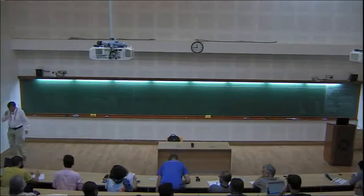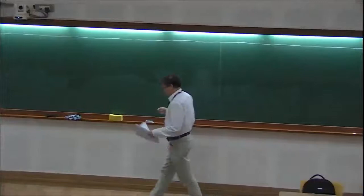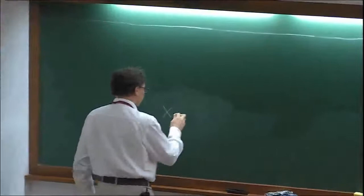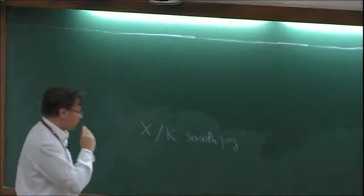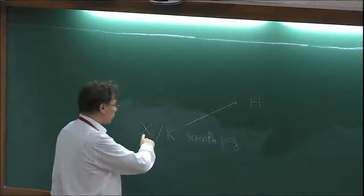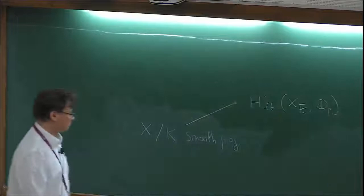The main goal of this second lecture is to construct Fontaine's rings of p-adic periods. Here is some motivation for these constructions. Let's consider a smooth projective variety over a local field K. One can associate to it different cohomology theories. If we want to get p-adic representations, we can consider the étale cohomology of X. This gives rise to p-adic representations.